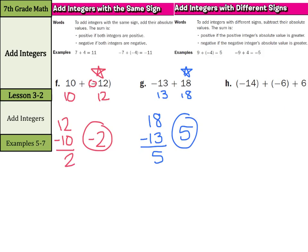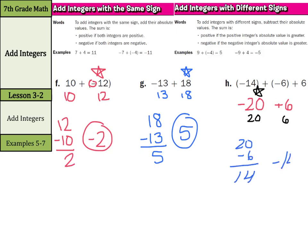What about negative 14 plus negative 6 plus 6? A couple of different ways to handle this. You could say negative 6 plus 6 is 0, and you're left with negative 14 — that's the easy way. If you add straight across: negative 14 and negative 6 are the same sign, so add 14 plus 6 is 20 but keep it negative, giving negative 20 plus 6. Now with different signs, the absolute value of negative 20 is larger, so the answer will be negative. Then subtract: 20 minus 6 is 14, so my answer is negative 14.